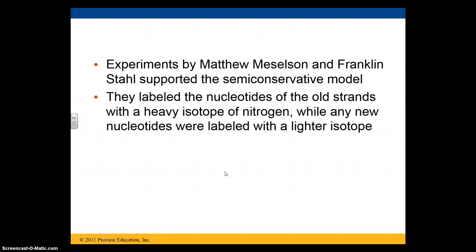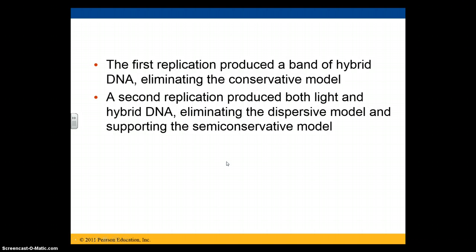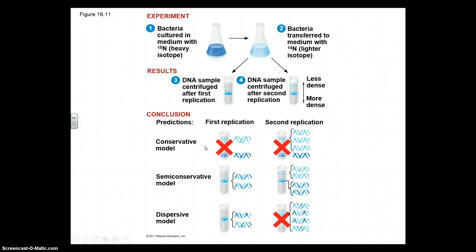Experiments by Matthew Meselson and Franklin Stahl supported this semi-conservative model. They were able to label nucleotides of the old strands with a heavy isotope of nitrogen, and the new nucleotides were labeled with a lighter isotope. The first replication produced hybrid DNA, which eliminated the conservative model. The second replication produced both light and hybrid DNA, which eliminated the dispersive model. The semi-conservative model was thus supported.